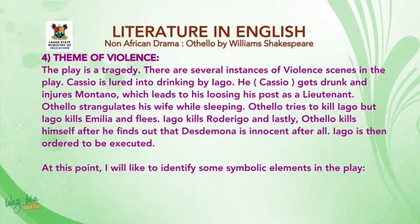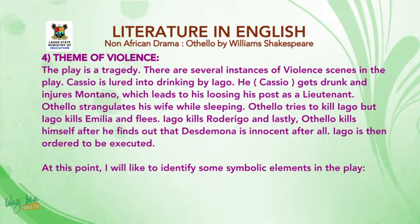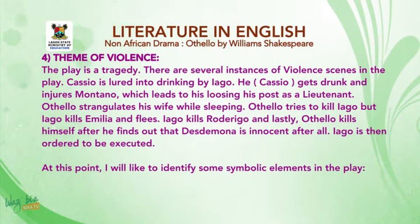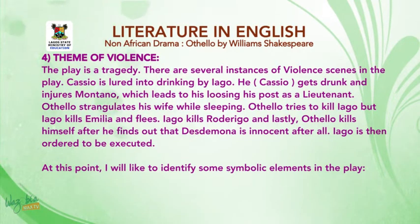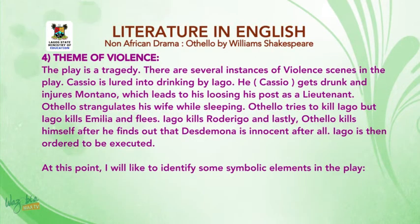The last theme is the theme of violence. The play is a tragedy, and there are several instances of violent scenes. Cassio is lured into drinking by Iago, gets drunk and injures Montano, which leads to his losing his post as lieutenant. Othello strangles his wife while she is sleeping. Othello tries to kill Iago, but Iago kills Emilia and flees. Iago kills Rodrigo, and lastly Othello kills himself after he finds out that Desdemona is innocent. Iago is then ordered to be executed.